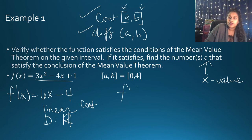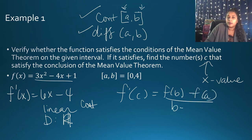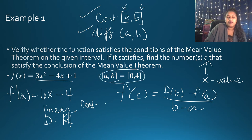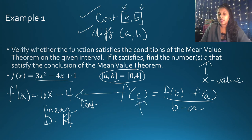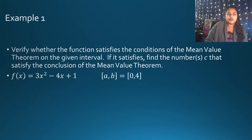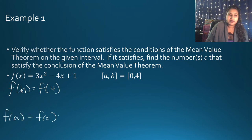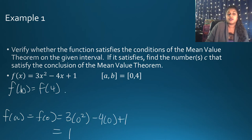So I can set F'(C) equal to F(B) minus F(A) all over B minus A. Now I solve for F(B) and F(A). F(A) = F(0): 3(0)² - 4(0) + 1 = 1. F(B) = F(4): 3(4)² - 4(4) + 1 = 48 - 16 + 1 = 33.